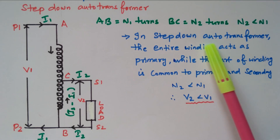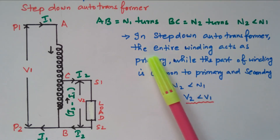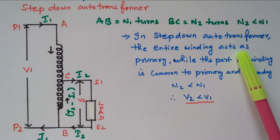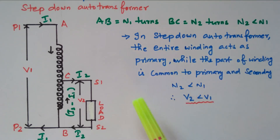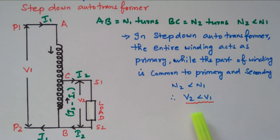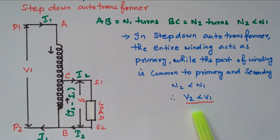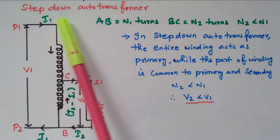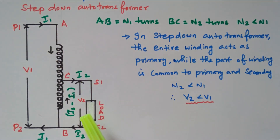In the step-down auto transformer, the entire winding acts as primary while part of the winding is common to primary and secondary. Since N2 is less than N1, V2 is less than V1, so the secondary voltage is lower — hence it is called a step-down transformer.